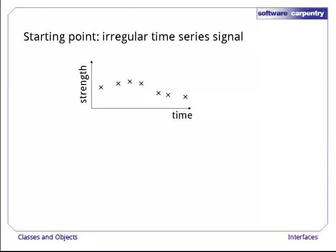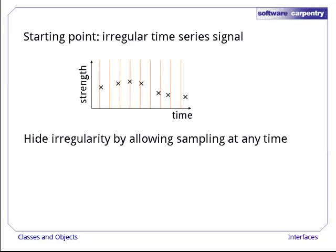Our starting point is a common problem in all of science and engineering. We have a signal that has been sampled at irregular intervals. We'd like to hide the irregular sampling by allowing people to sample the signal at arbitrary times. One way is to use a step function.